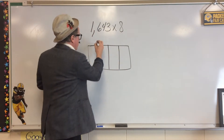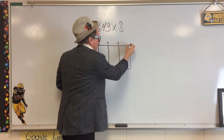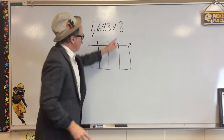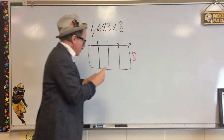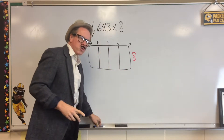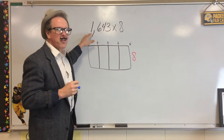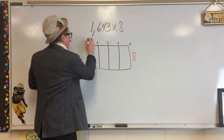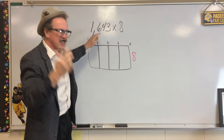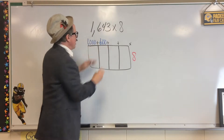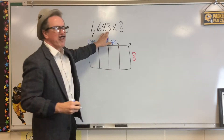Every time you divide it, you put a plus symbol right here, and at the corner, a multiplication symbol. Our multiplier is 8, so we're going to put that right over here. Now we have to do expanded notation for 1,643. In the thousands column we have 1,000; in our hundreds we have a 6, which represents 600; in our tens column a 4 represents 40; and in our ones, a 3.